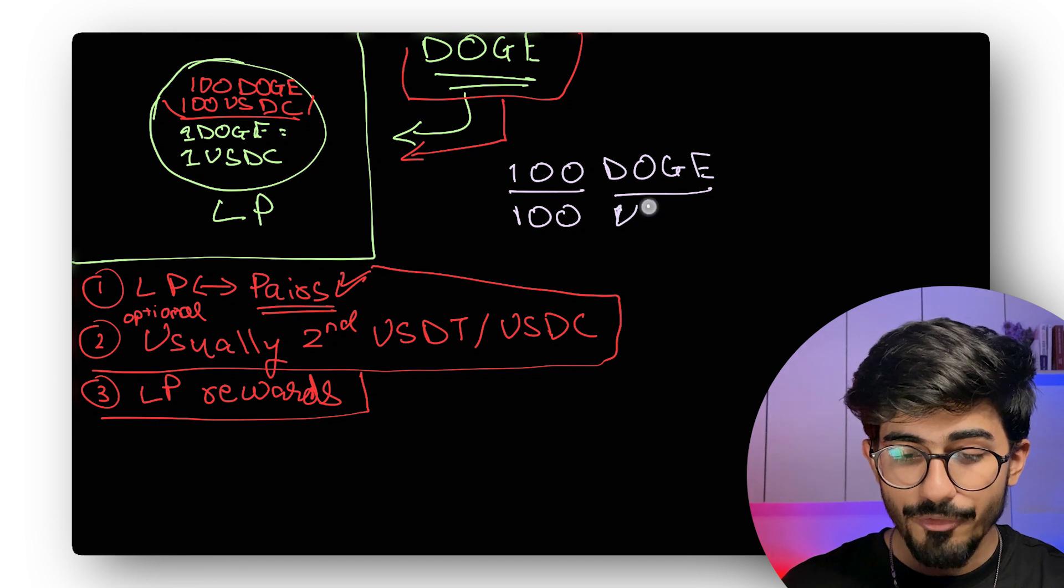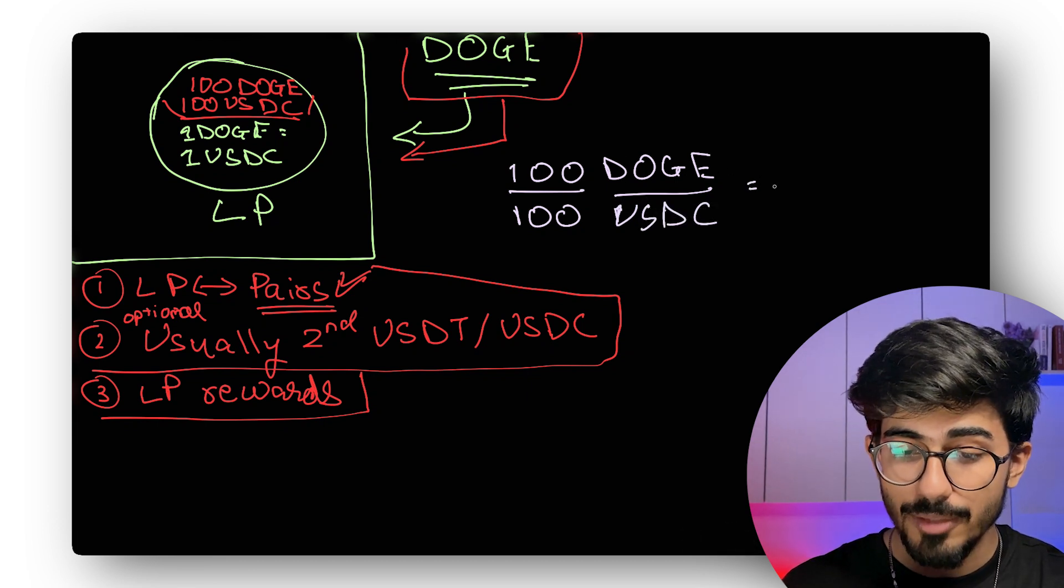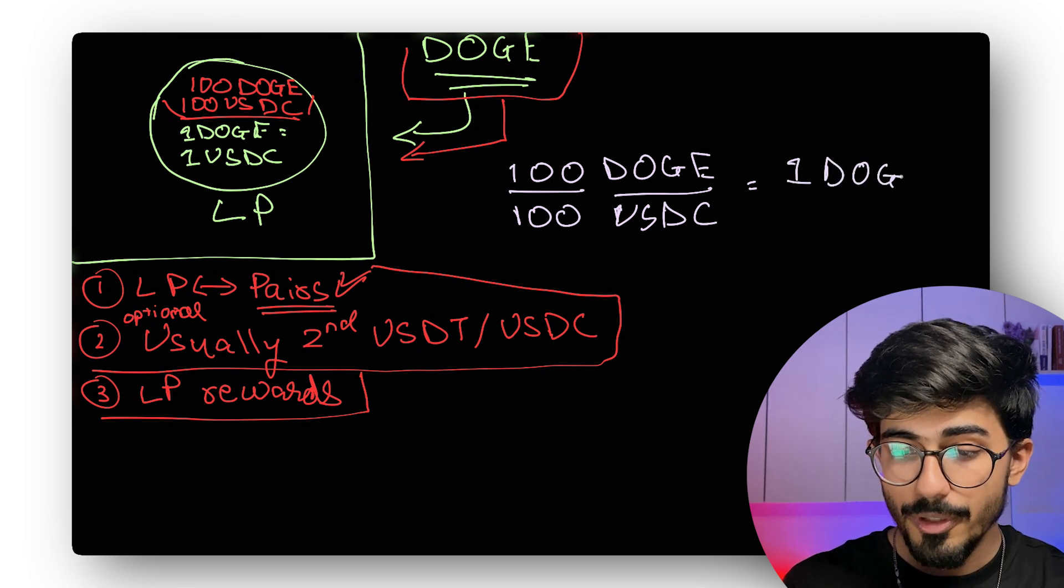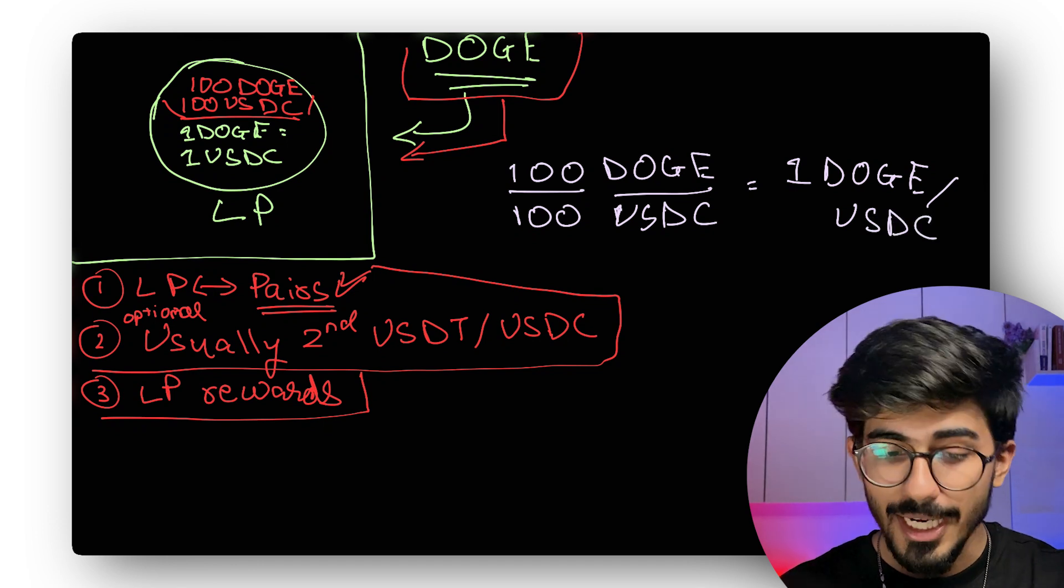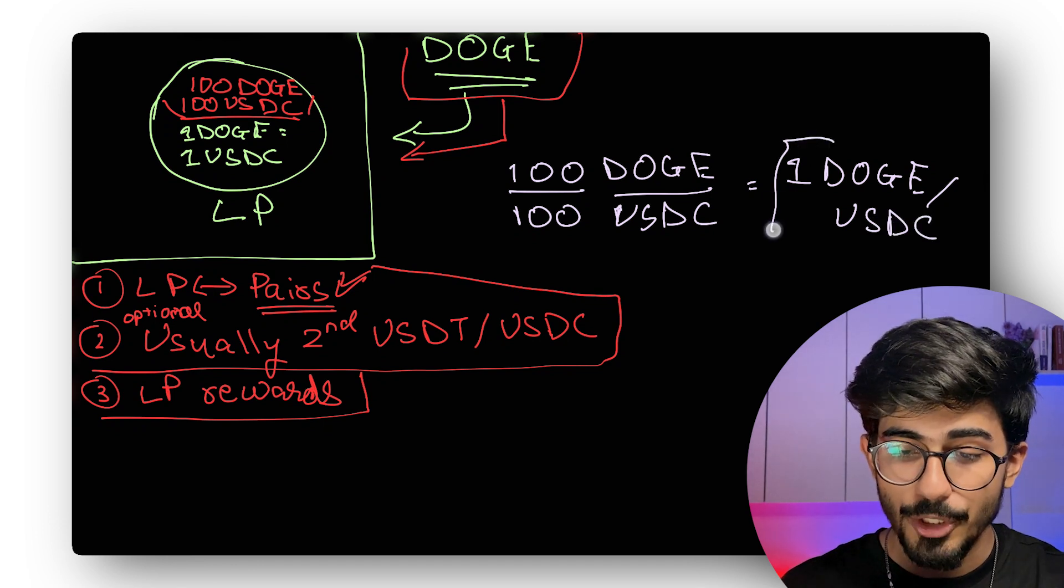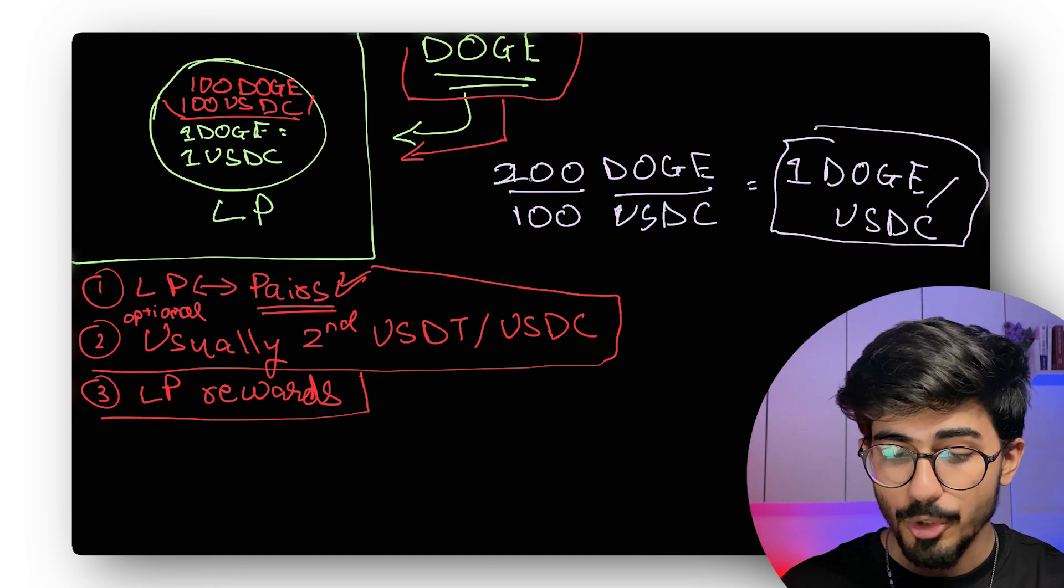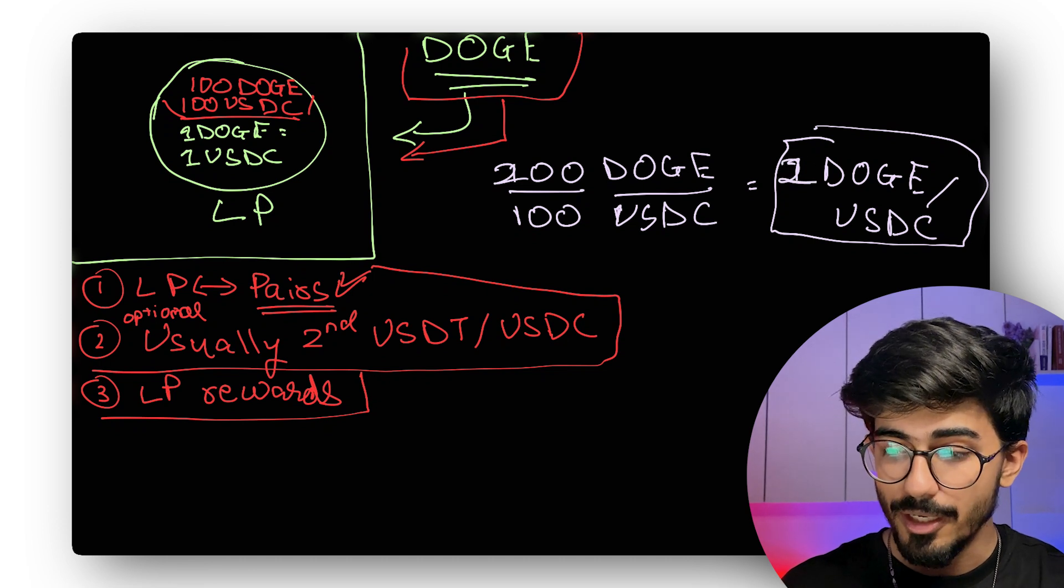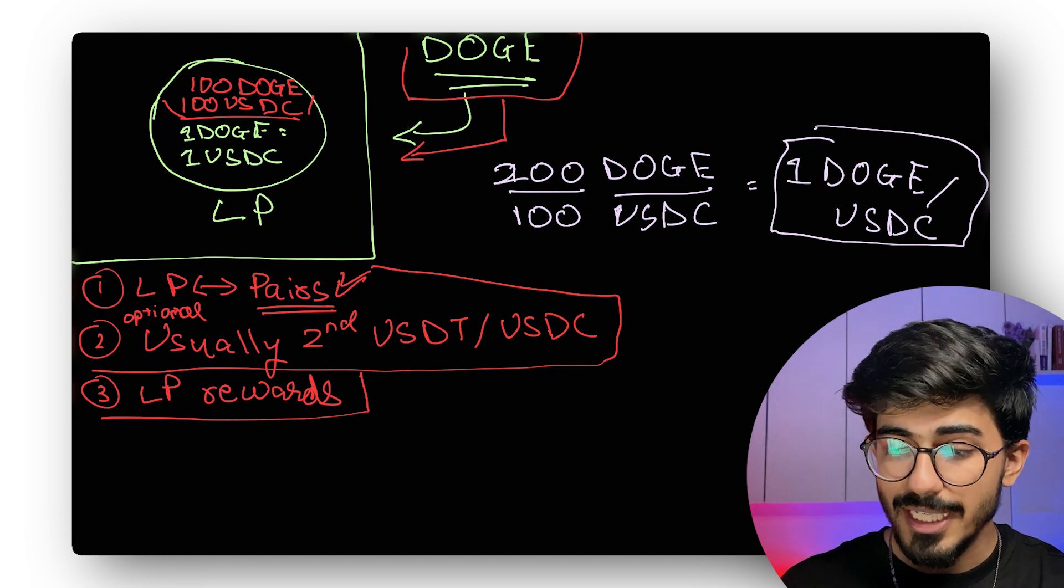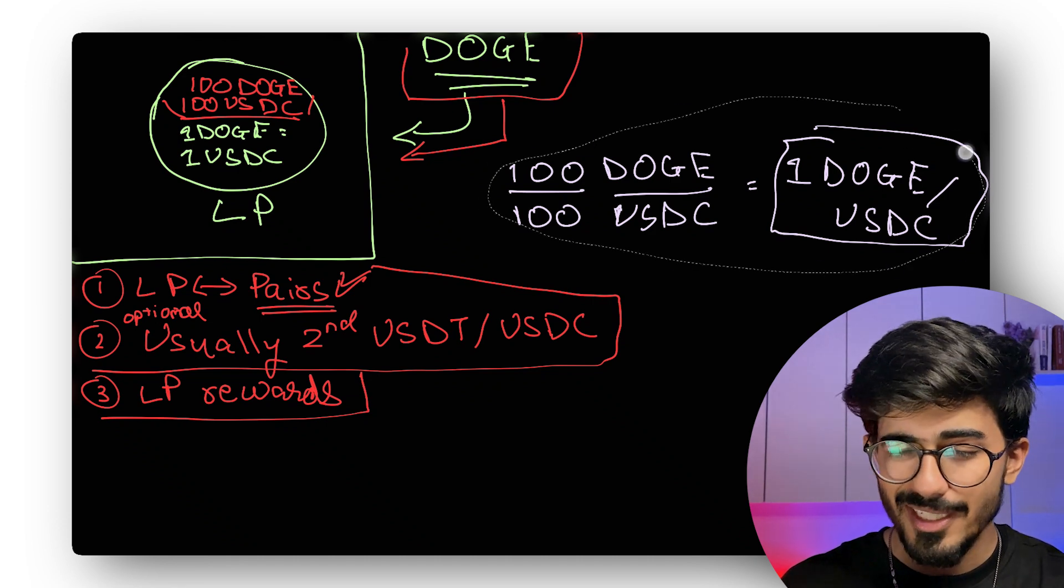So over here, we have 100 Doge and 100 USDC. The ratio comes out to be one Doge per USDC. So that's how you actually get the price of one Doge and it's quite simple. Say, for example, you had 200 Doge instead of 100, the price would be 2 Doge per USDC. So that's how it all works. It's really simple and straightforward, nothing too complex.